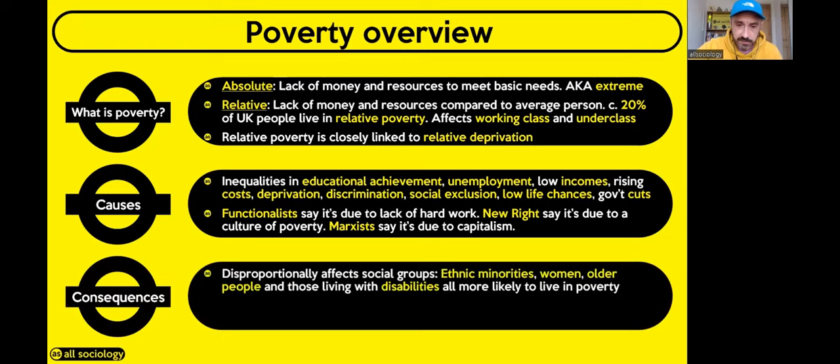What are the consequences of poverty? First, it disproportionately affects certain social groups: people from ethnic minorities, women, older people, and those with disabilities are statistically more likely to be living in poverty. We'll look at the different social groups shortly.